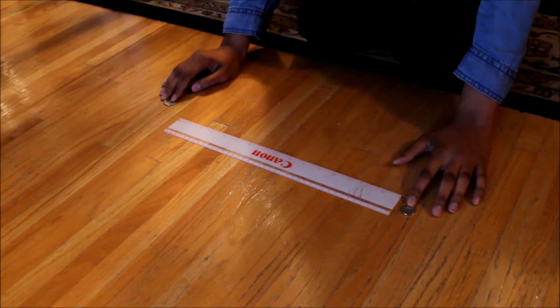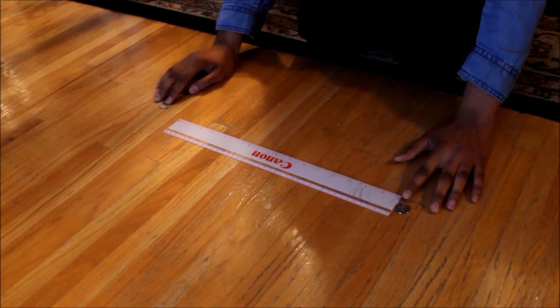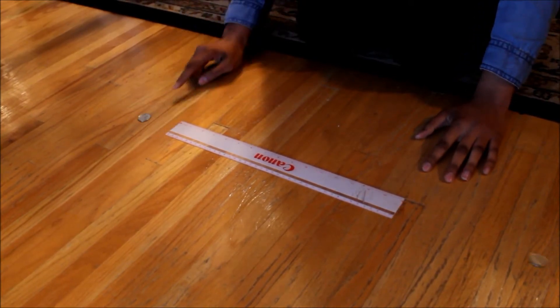Try this at home! We can see momentum in real life by using a ruler, a quarter, and a nickel. First, let's place the nickel really close to the ruler and place the quarter at a distance and slide it.